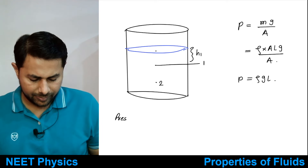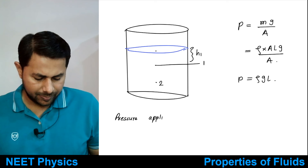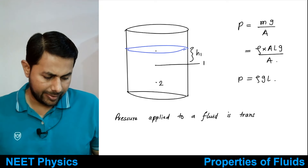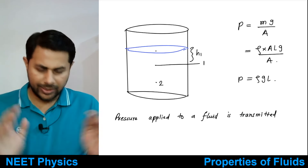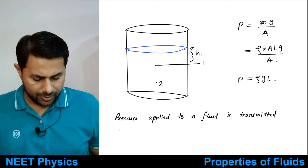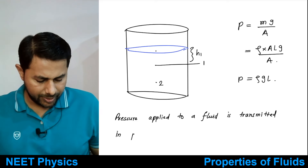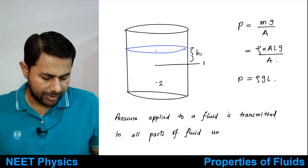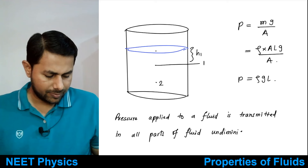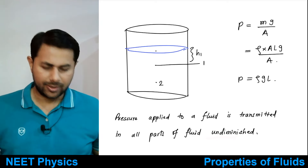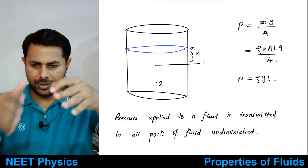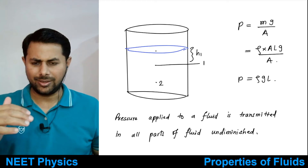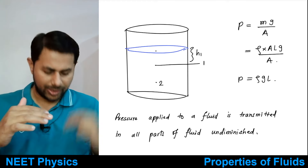Pressure applied to a fluid is transmitted undiminished — that means without decreasing. If you apply some pressure at the top, the pressure is applied everywhere in the fluid, at all points. Suppose you increase some pressure at the top — the pressure at the bottom would also increase by the same amount.